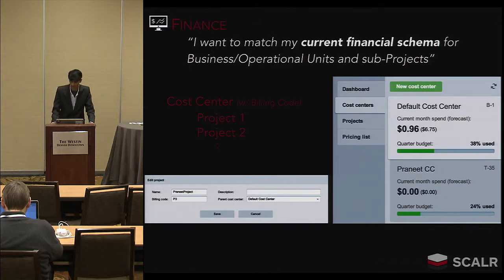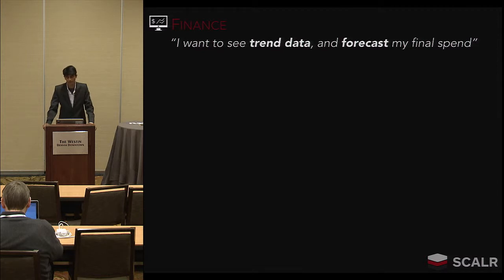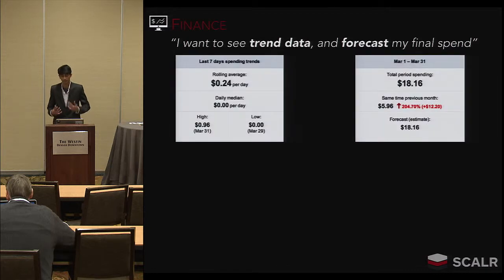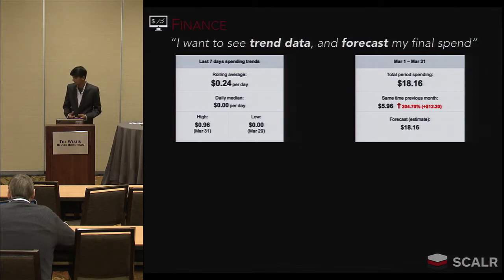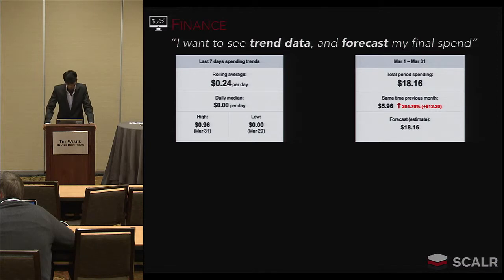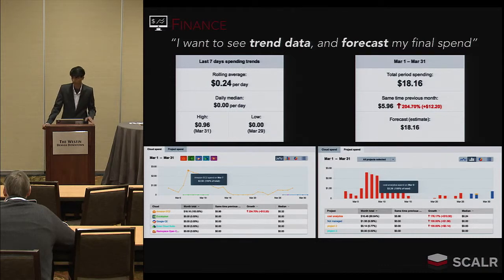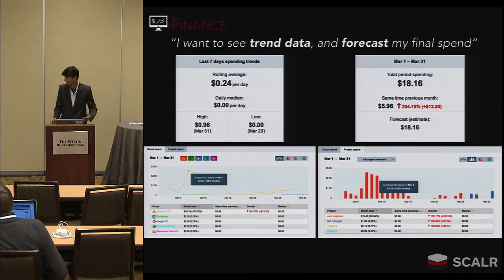Finance also wants to see trend data and forecast final spend — similar to what IT wanted at the farm instance-type level, but here at the project and cost center level. This is especially critical for organizations with a multi-cloud strategy. For a specific cost center, we provide the last seven-day rolling average, the median, and the highs and lows, which are used for the forecast estimate. You can see the total period spend, growth over the previous month, previous month spend, and the forecast. There are also graphical breakdowns — line graphs, bar graphs — showing spend by cloud or by spend category.